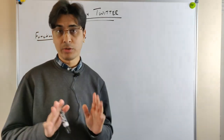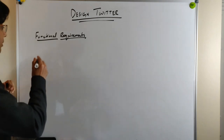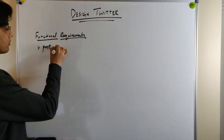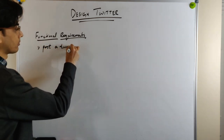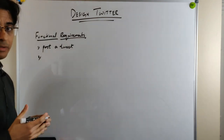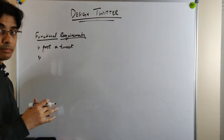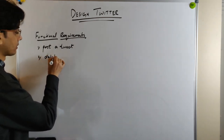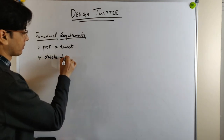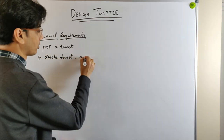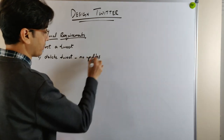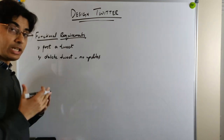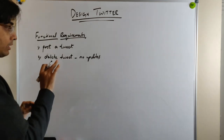The very first functional requirement is the user should be able to post a tweet. The second functional requirement is the user should be able to delete his tweet, but he cannot edit or update the tweet. No updates — this is very important because if we allow updates or edits to a tweet, it will actually change our design substantially and we are not going to allow this.